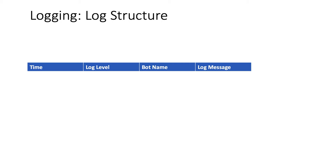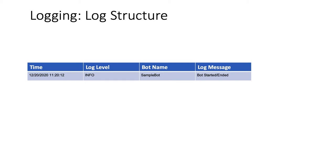There are some basic things you would always need: the time you want to capture, the log level, the bot name, and the log message. Especially important here is the log level. You can have INFO level, DEBUG level, ERROR, or FATAL. For INFO, you describe when the bot started, when it ended, milestones completed, and other important steps. For DEBUG, suppose you are processing hundreds of records and there's an issue — debug will have all the IDs and details you need to fix the issue.